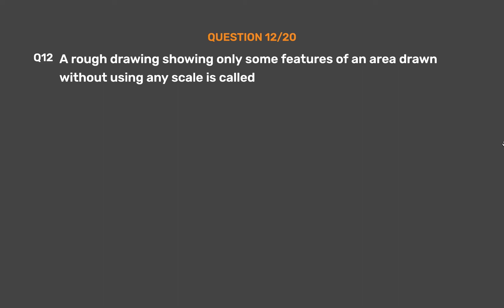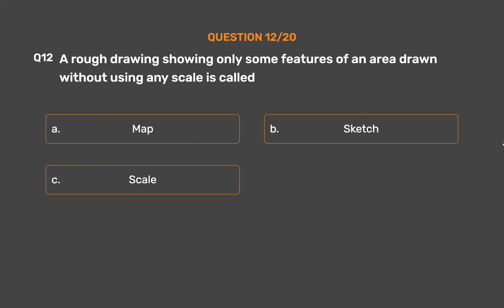Question number 12. A rough drawing showing only some features of an area, drawn without using any scale, is called — Option A: Map. Option B: Sketch. Option C: Scale. Option D: Conventional drawing.